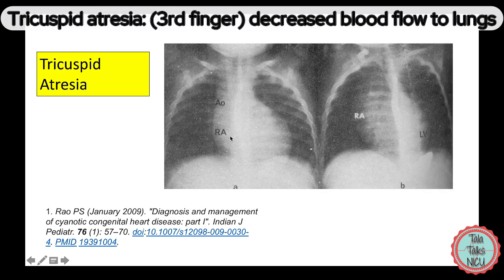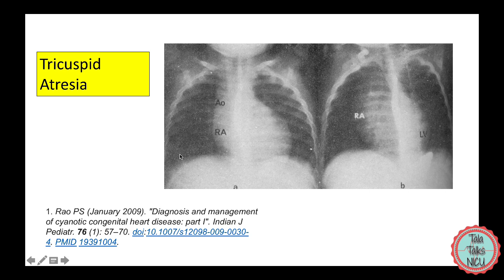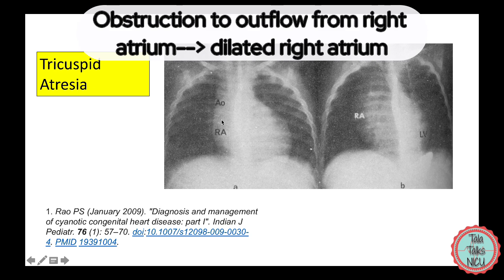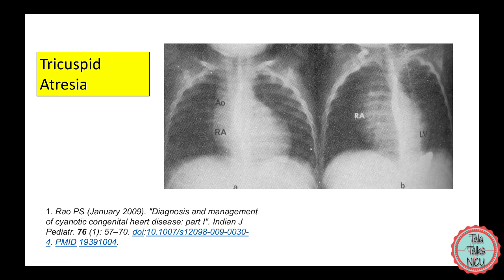Tricuspid atresia is number three, so you'd expect decreased blood flow to the lungs. There is literally an obstruction of blood going from the right atrium to the right ventricle, so there needs to be a hole between the atria — normally an ASD or a large PFO. Because blood has trouble getting out of the right atrium, that chamber will be a lot larger and the right ventricle will be a lot smaller. You can kind of tell on the silhouette that it's missing.